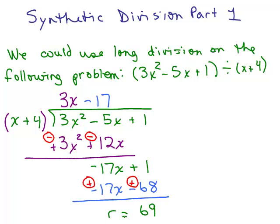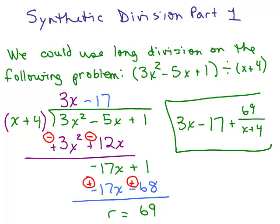And that's our remainder. So how do we write this answer? Up here is the quotient, the 3x - 17, so the answer is 3x - 17. The remainder is 69. Remember we write 69 over what we divided by, and what we divided by was this x + 4. And so this would be the answer.